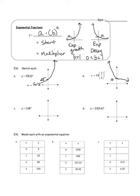For example c, there's no number written — it's actually y = 1 × 1.08^x. The starting value is 1. Did you pick up on that? That was the tricky part. 1.08 is bigger than 1, so it's exponential growth. And example d starts at 23, and 0.6 is less than 1, so it's exponential decay.